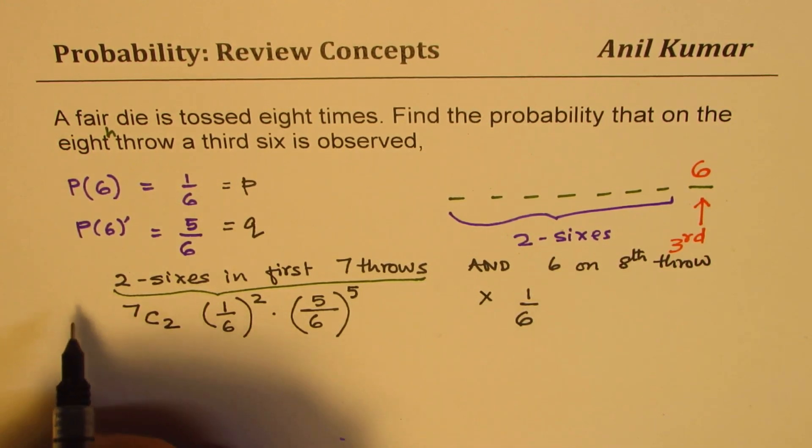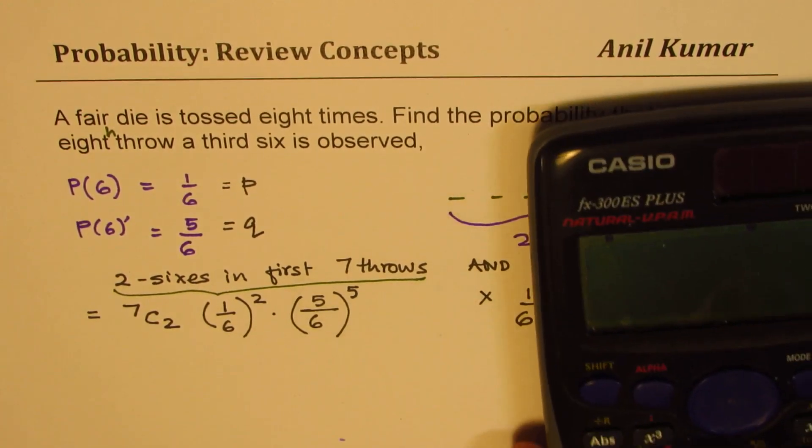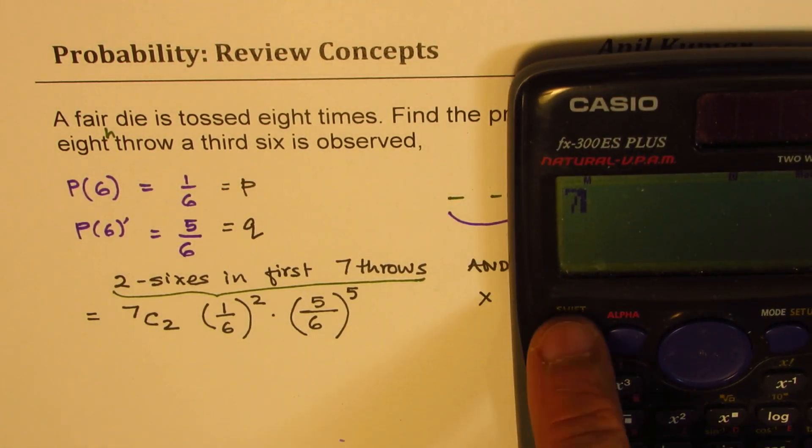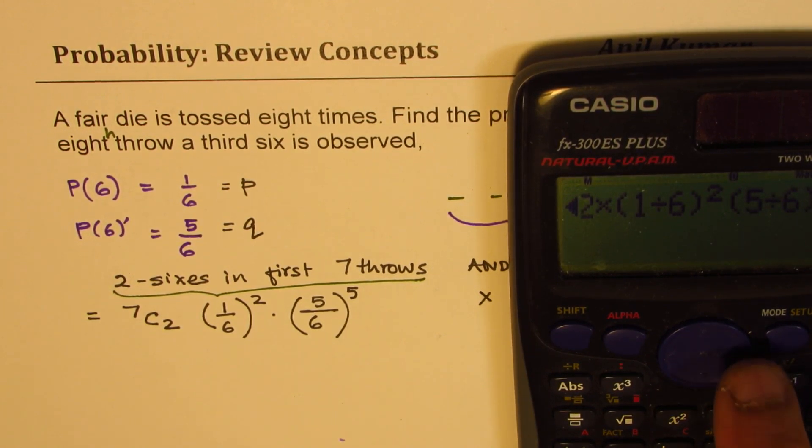So multiplying everything is our answer. Does make sense to you, right? So this is what we have to calculate. So let's find this out. So we have 7C2, which is 21, times within brackets one divided by six whole square, within brackets five divided by six to the power of five. And we are going to multiply this by one over six, right? So times one divided by six, or just divide by six, is equal to...